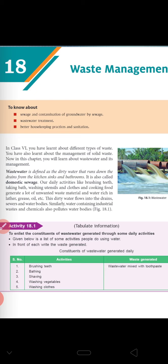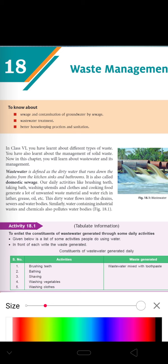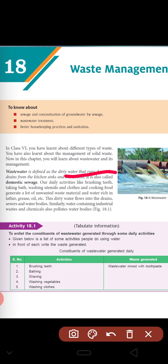So what is waste water? The dirty water that runs down the drains from the kitchen sinks and bathrooms, that is called domestic sewage. For daily activities like brushing teeth, taking bath, washing utensils, clothes, cooking food — they generate loads of unwanted waste material and water rich in lather, grease and oil. So this dirty water flows into the drains, sewers and water bodies.